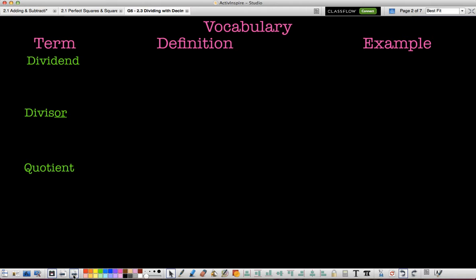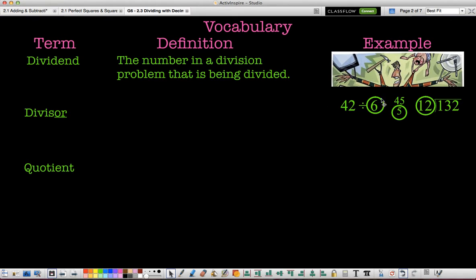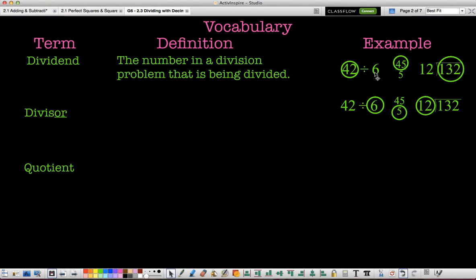We've talked a bit before about the different pieces of a division problem, so this is just going to be a quick review. This should already be in your vocabulary notebook. Dividend is the number in a division problem being divided. Like the dad here is the dividend, he's being divided. But actually in the problem, it's that first number listed, the top number listed, or the inside of the long division problem.